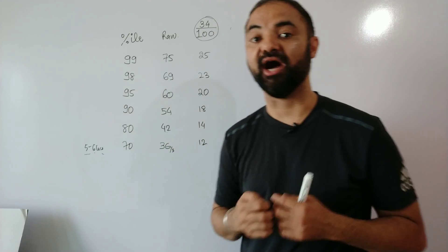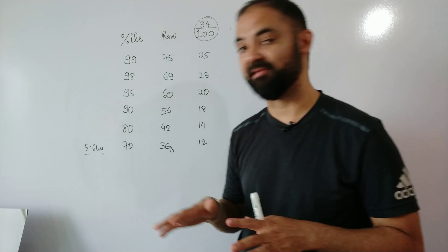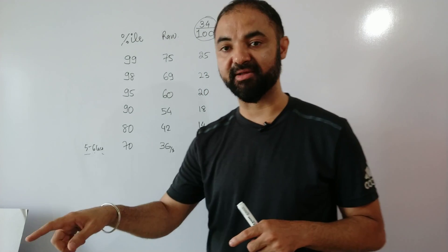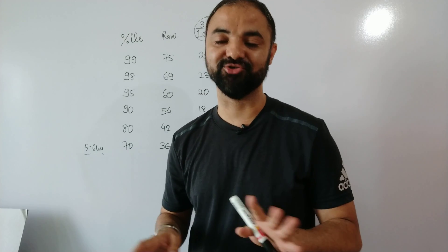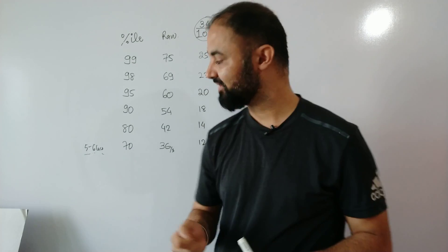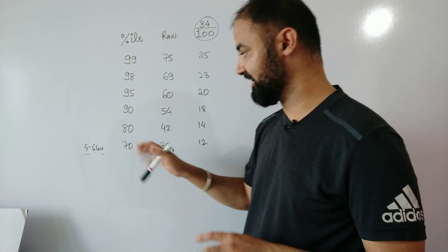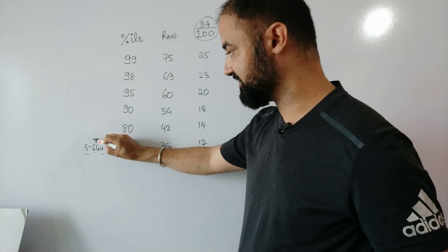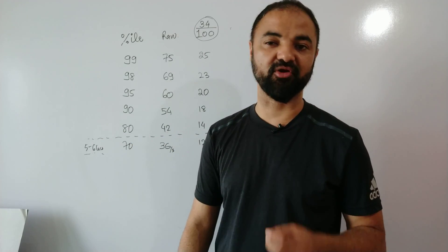80 percentile is where the few IIMs start. If you're a non-engineer, you might get a couple of IIM calls at 80 percentile plus. Like I just got a message from a student saying I got IIM Amritsar call at 78 percentile. Probably if you have maintained good sectional cutoffs, you will get a call at 80 percentile. So new IIMs especially, and if you're a female non-engineer, you will get a decent college at 80 percentile, a couple of IIM calls, which is 14 questions correct.